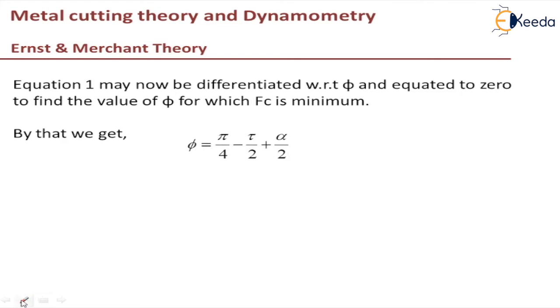In different textbooks, they use different notation for tau, the angle of friction. For angle of friction they use beta, and for rake angle in some textbooks they use gamma. We need to be careful about the notation used. We are using this notation: phi equals pi by 4 minus tau by 2 plus alpha by 2. This is the equation which Merchant's theory gives you, the equation they have developed.